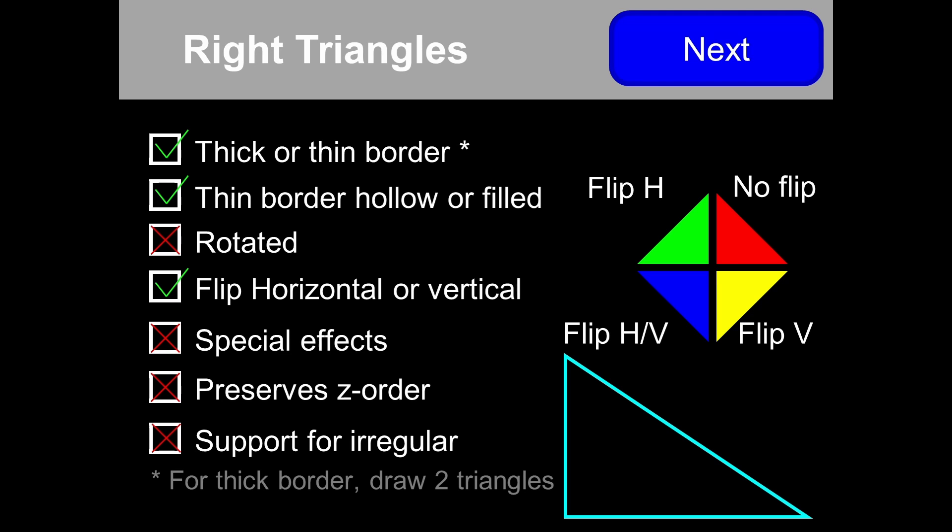We also support right triangles, whether thin border or thick border, hollow or filled. These are very different from isosceles triangles — you don't rotate them to get a different shape. Here you use the flip instead.